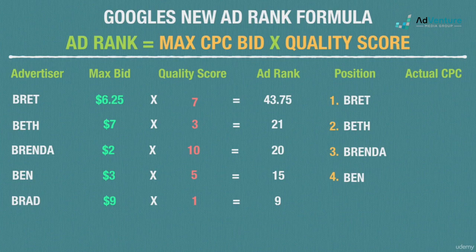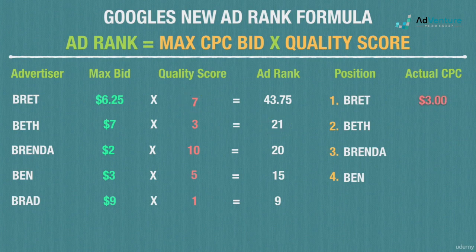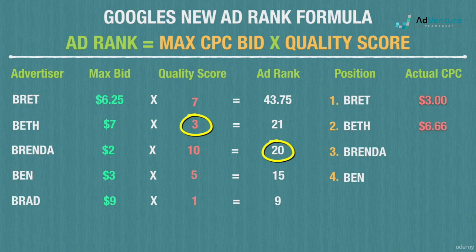Let's calculate actual CPCs. Brett's actual CPC: take 21 (Beth's ad rank below him) divided by 7 (his quality score) = $3.00. Beth's actual CPC: take Brenda's ad rank of 20 divided by 3 (Beth's quality score) = $6.66. For Brenda and Ben: Brenda's actual CPC is $1.50 and Ben's is $1.80.